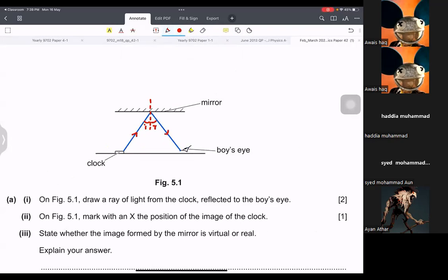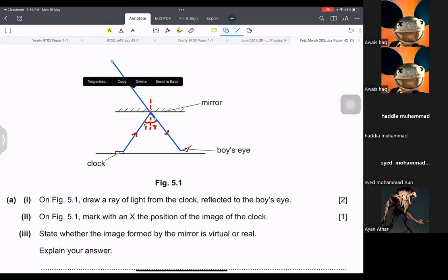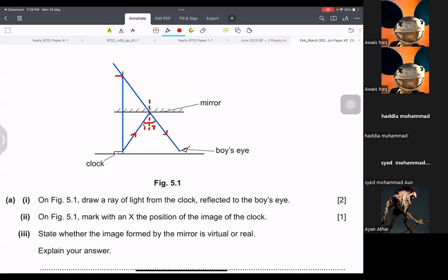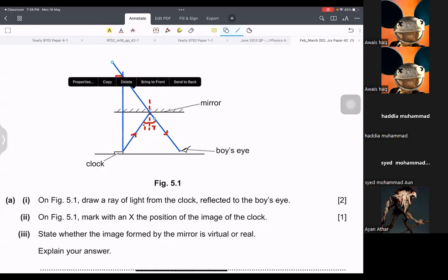Now it says mark X the position of image of the clock. So what you do? Extend this line. Let me show you. There is a way to extend the line. And then make a line like this. So you see that it will be exactly behind the mirror and it's the same distance. So you can approximately do it. This should be the image. And then you can erase the lines that we draw. So basically, it will be exactly the same distance and above.